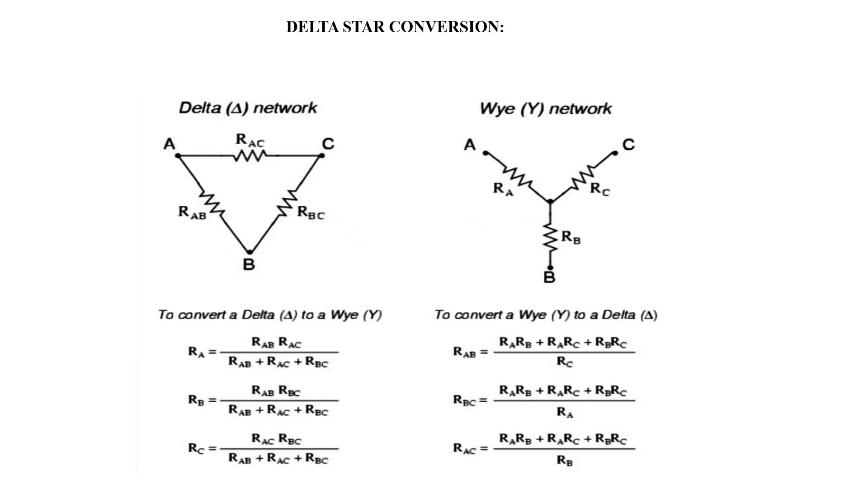Delta star conversion. If the three resistances are connected in such a manner that one end of each is connected together to form a junction point called star point, the resistances are said to be connected in star.